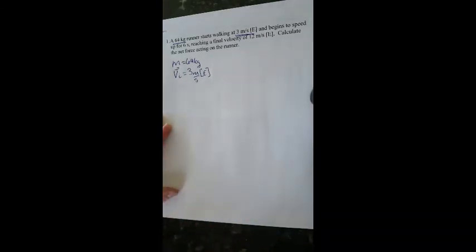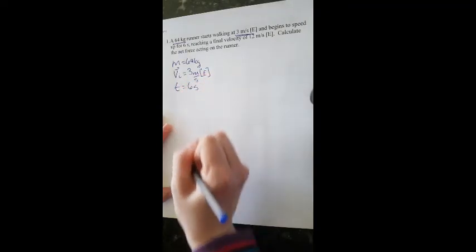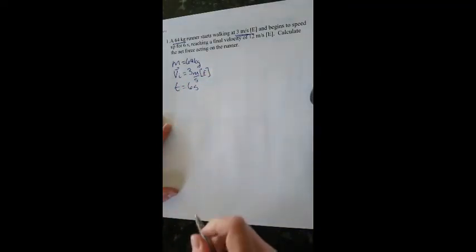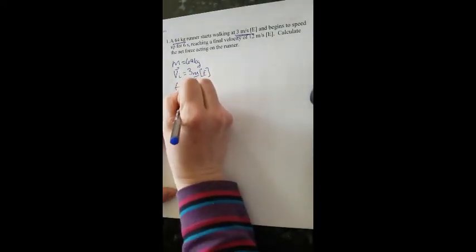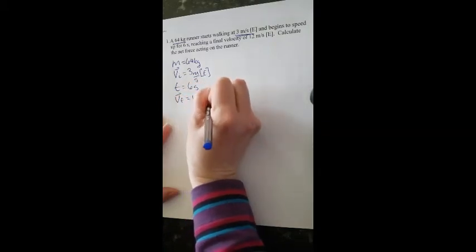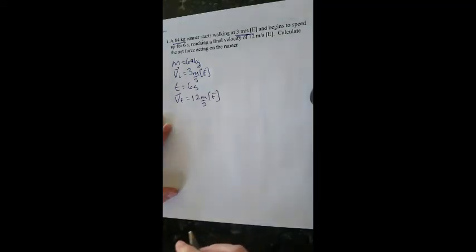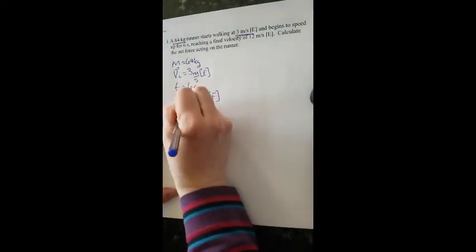And then he speeds up for six seconds. Six seconds is our time, reaching a final velocity of 12 meters per second. So VF is equal to 12 meters per second east. Then it says calculate the net force acting on the runner. So we're looking for F net.